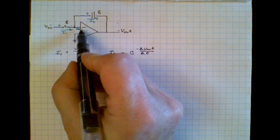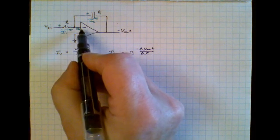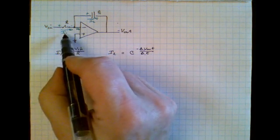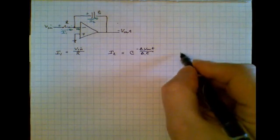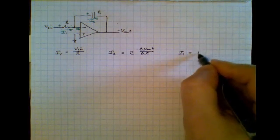Now recall that neither of these two inputs actually draws current. So therefore I1 is equal to I2. So we'll just write that down. I1 is equal to I2.